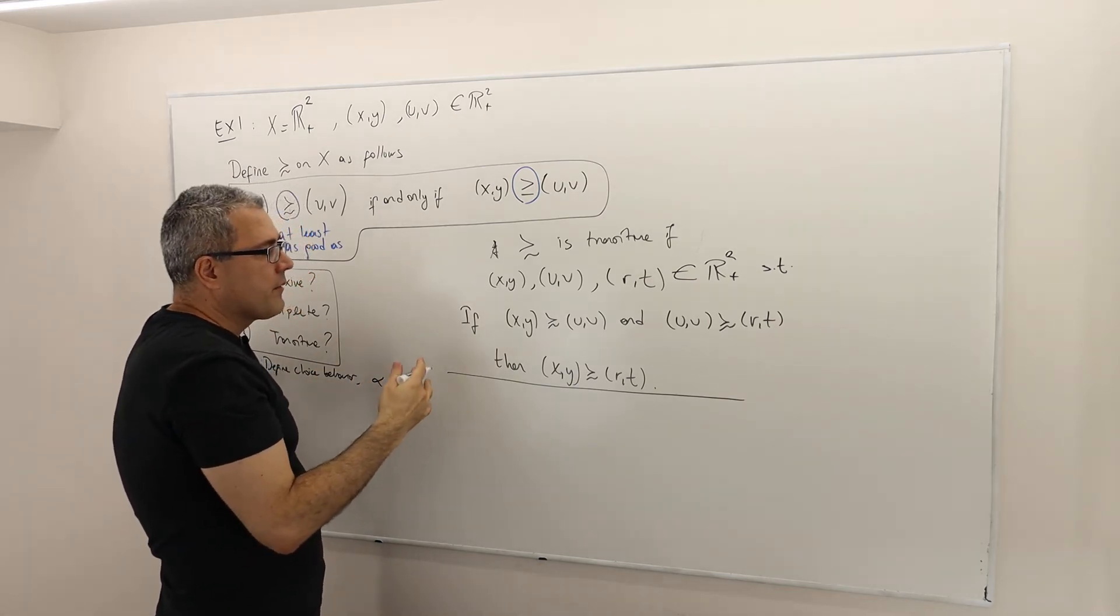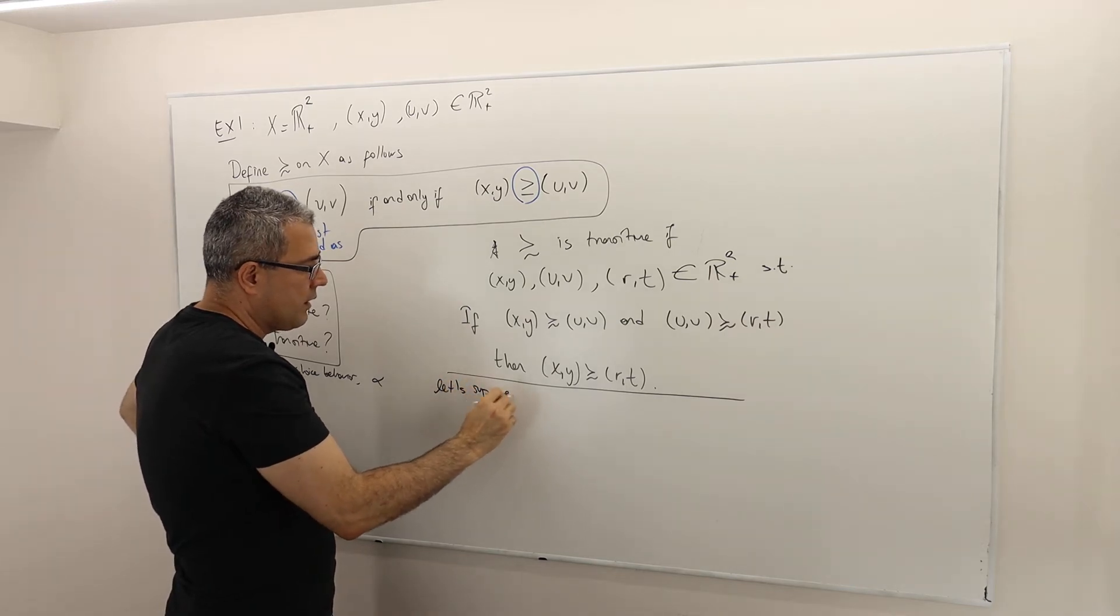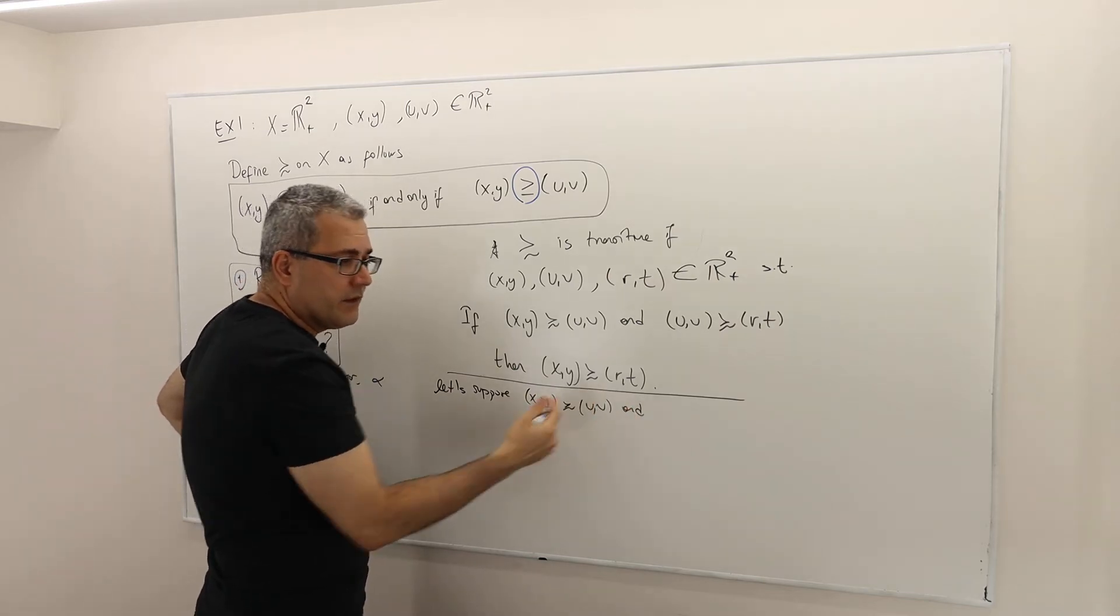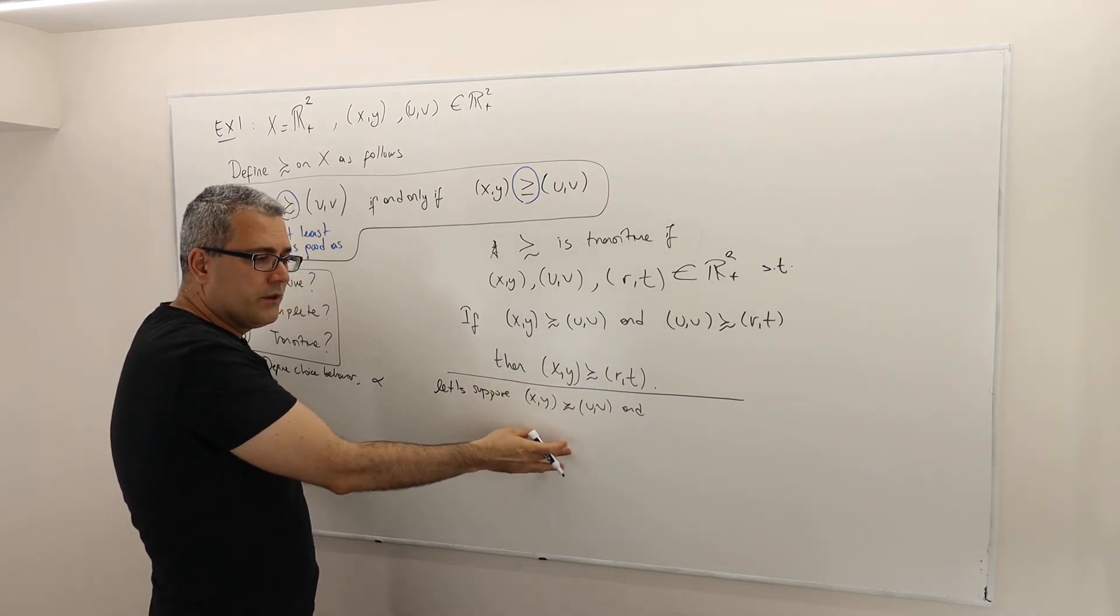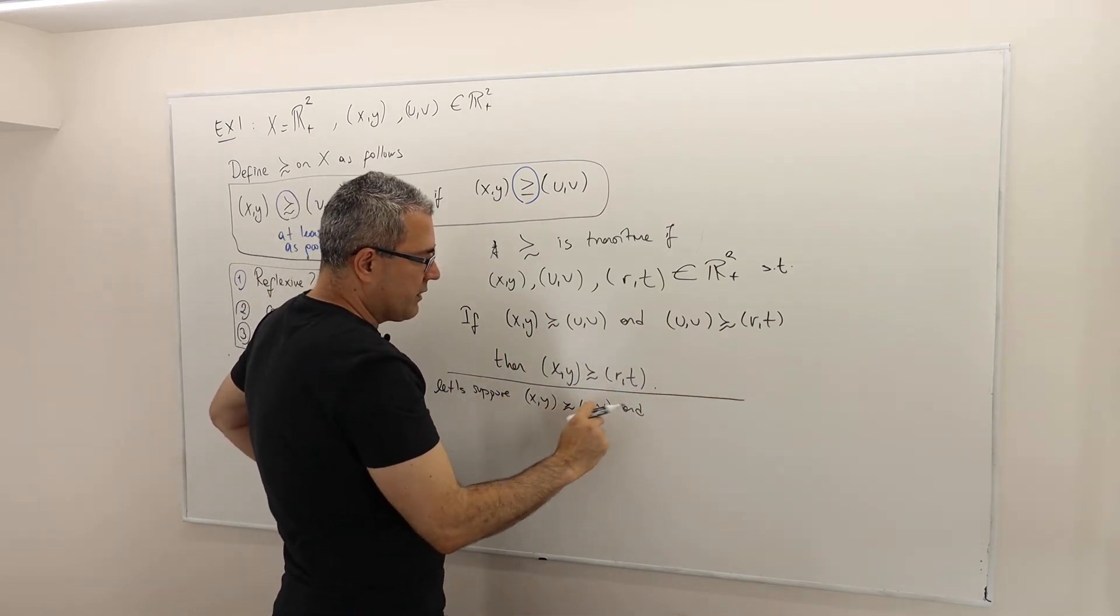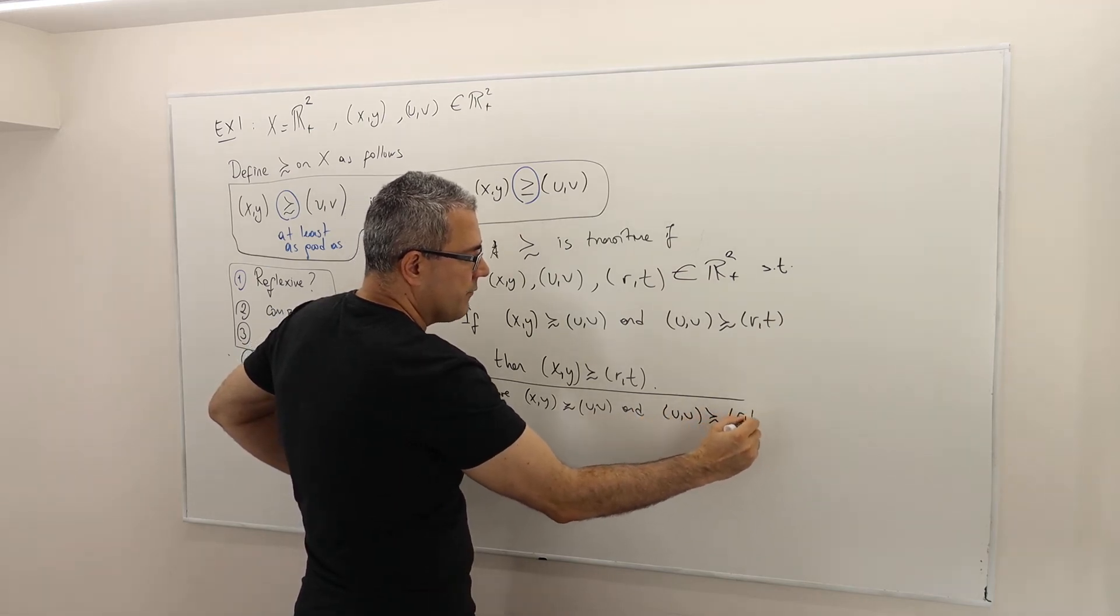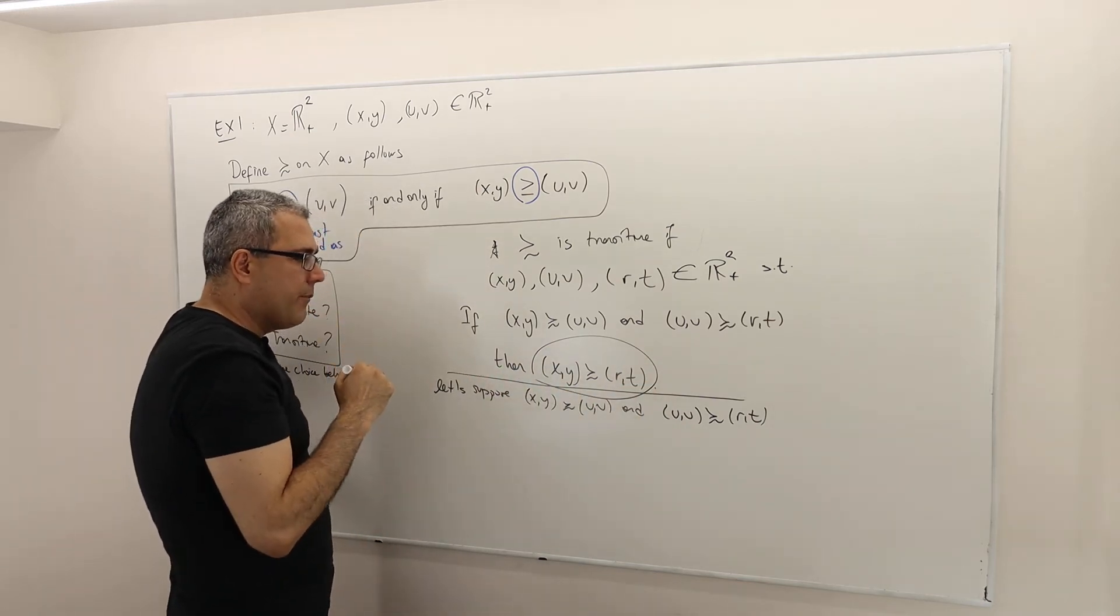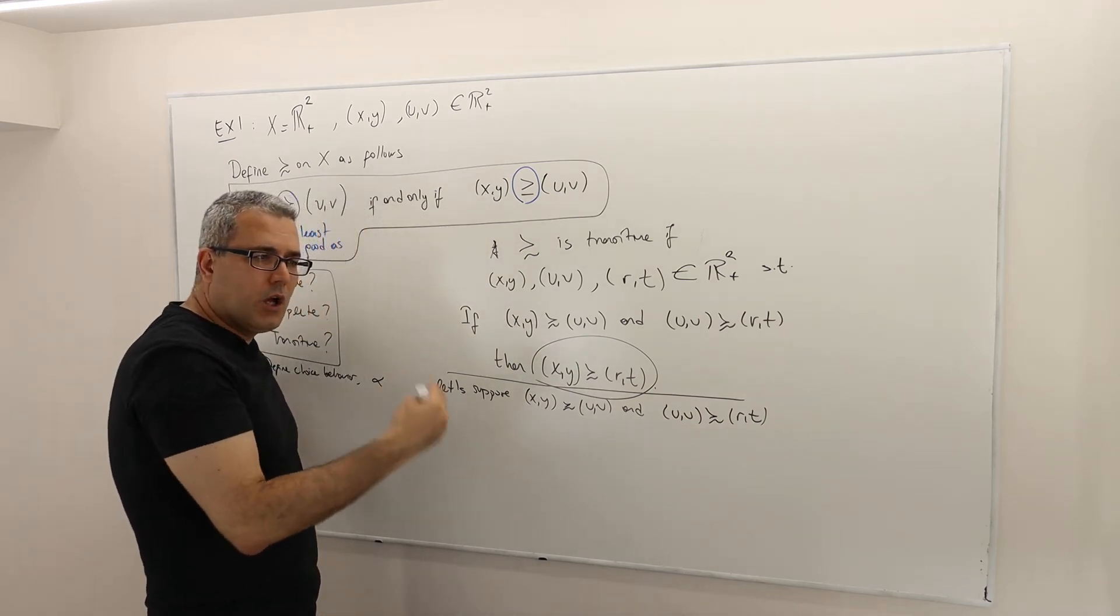That may be more important. So first off, let's suppose X, Y is at least as good as UV and. This is how I prove a conditional argument. Assume for conditional derivation, the if part is true. So meaning X, Y is at least as good as UV and UV is at least as good as RT. So I need to prove that this holds. But once I have these, these are true, start doing logical deductions.